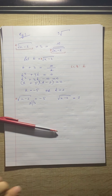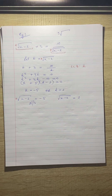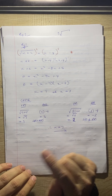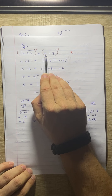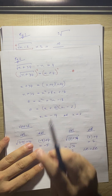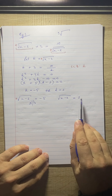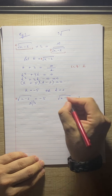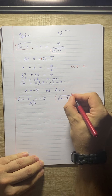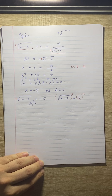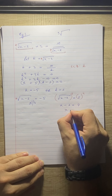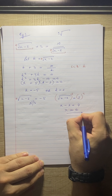With the previous examples I had to do a check because there was a variable on the right-hand side. With this one here, we don't have a variable on that side, so I don't need to do the check — only if you have a variable on that side do you need to check. So all I have to do is square both sides: x minus 2 equals 4, so x equals 6. That is your solution.